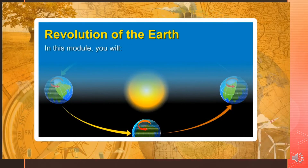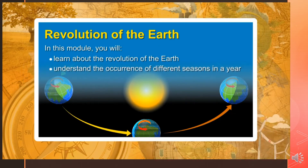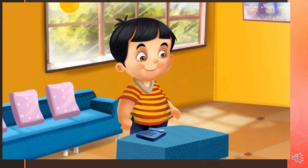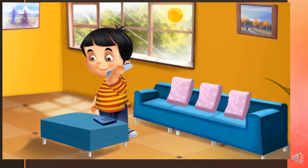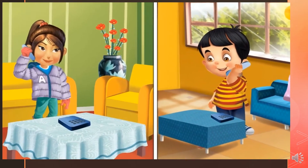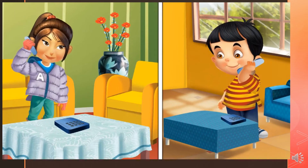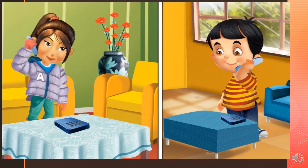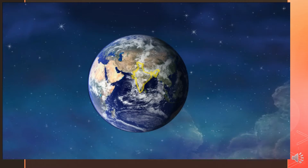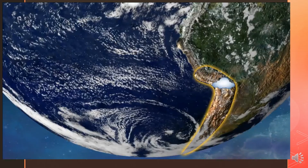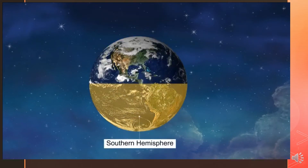Revolution of the Earth. In this module, you will learn about the revolution of the Earth and understand the occurrence of different seasons in a year. Sid's friend Sophie has gone on a summer vacation to Chile in South America. One day, Sid decided to call her. It is hot in India but cold in Chile at the same time because India lies in the Northern Hemisphere and Chile in the Southern Hemisphere.